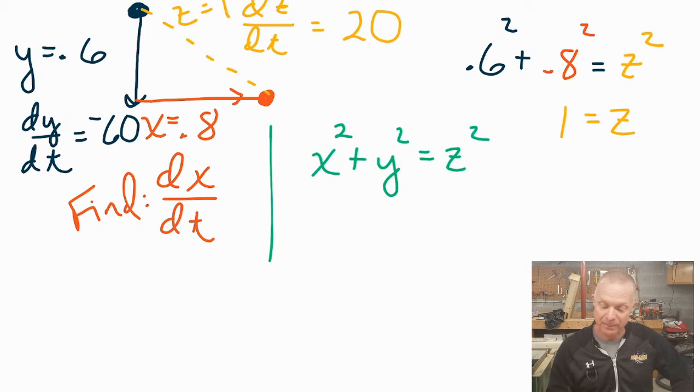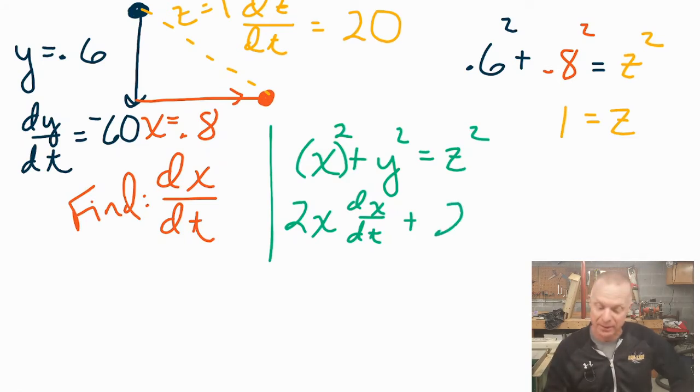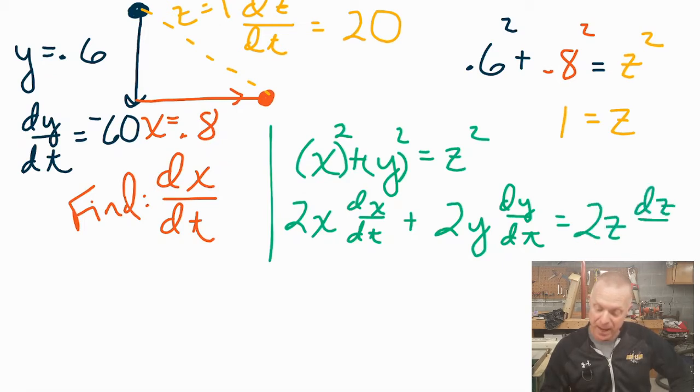So the derivative of X squared is 2X. But then remember, you have to do the derivative of the inside. And so that's going to give you a DX DT. When we go to do the derivative of Y squared, it's going to be the same thing. You're going to bring the two down. Yes, the derivative is 2Y, but then you have to do the derivative of the inside. DY DT. And then the same thing with Z.